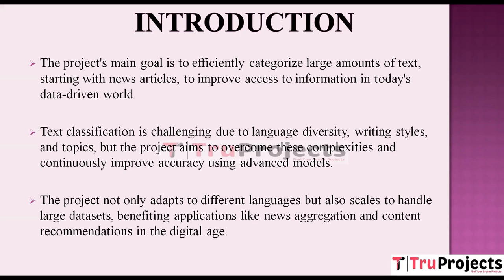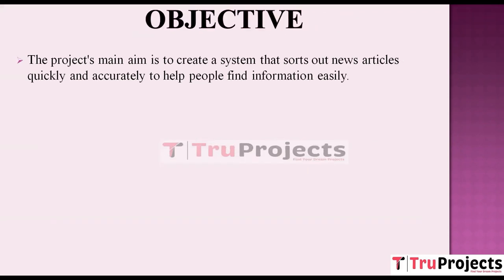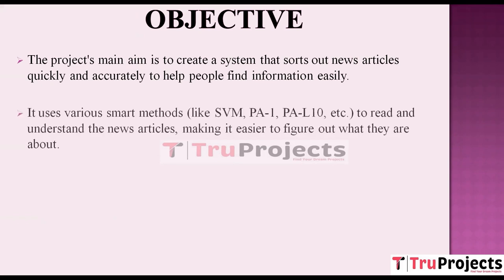The primary objective is to develop a system that can efficiently categorize news articles. This involves the use of advanced machine learning algorithms like SVM (Support Vector Machine), Passive Aggressive model PA1, PAL10, and more, to analyze articles quickly and accurately. The system is designed to work with text in multiple languages and handle diverse writing styles and topics found in news articles.